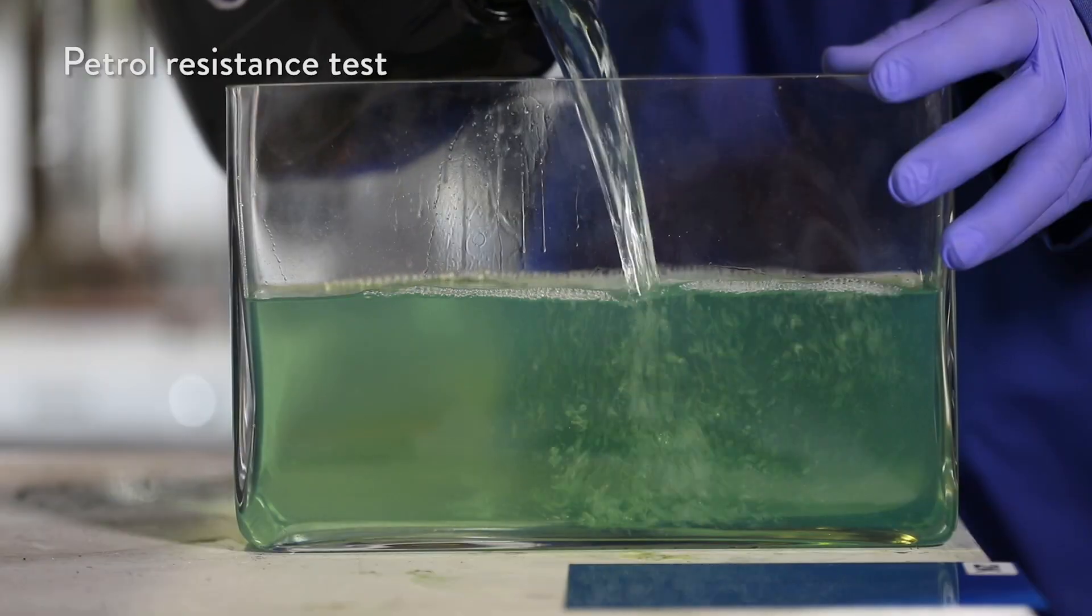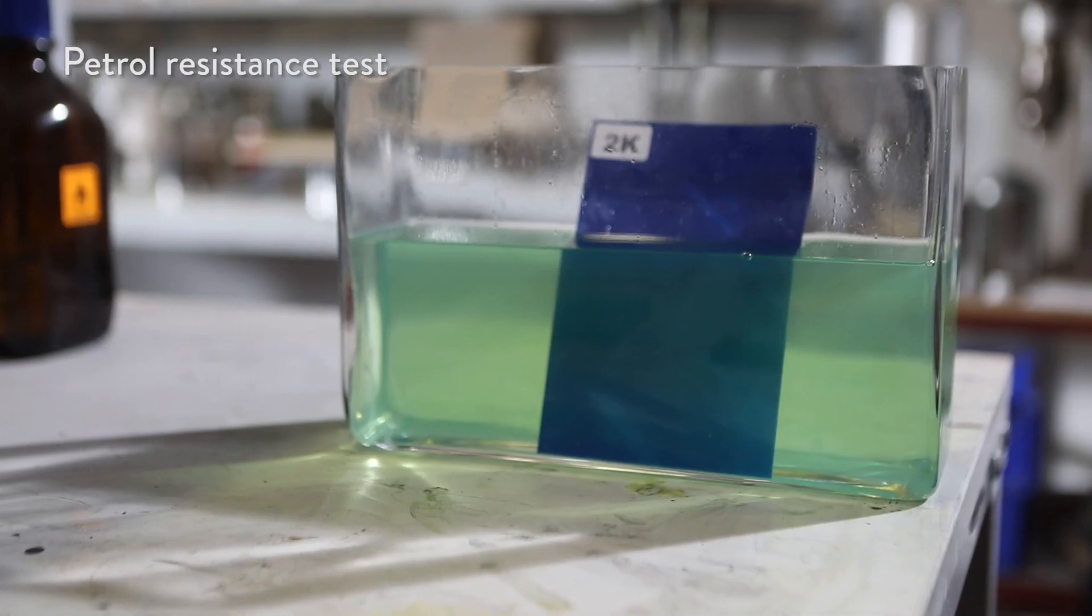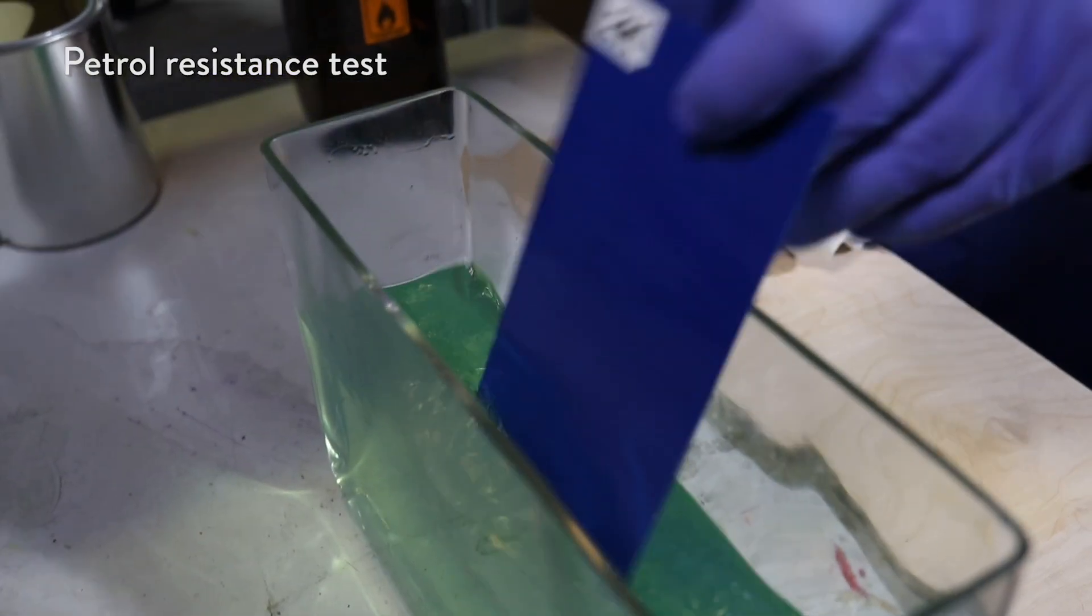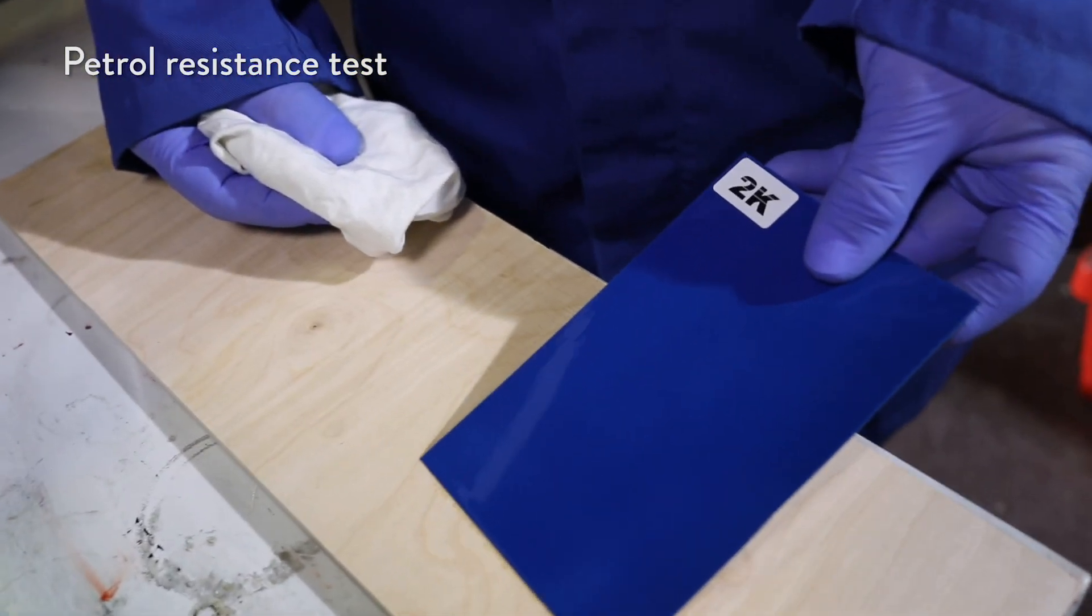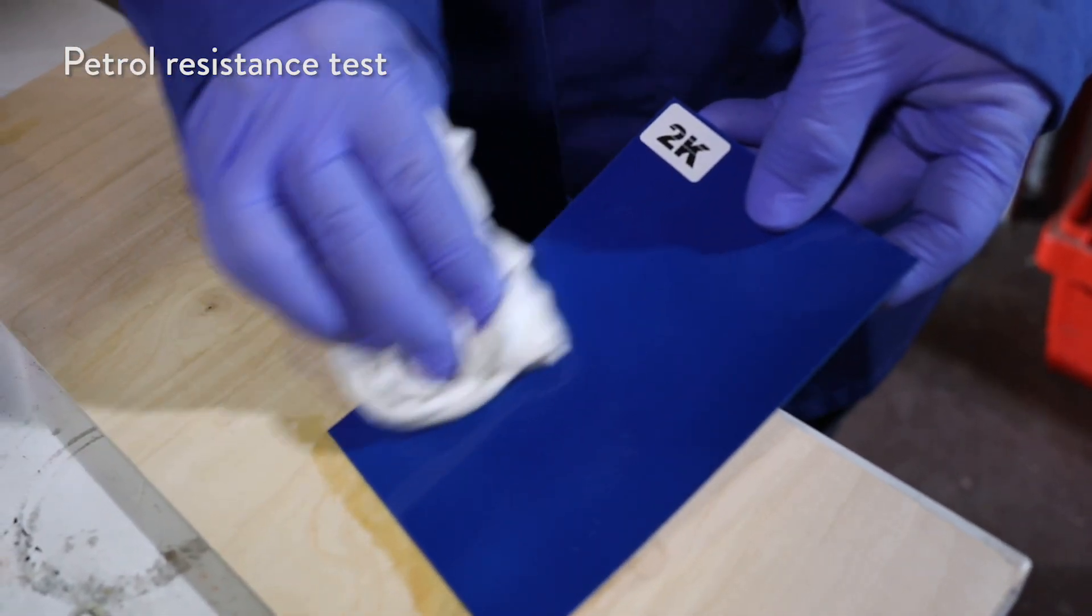After the paint is cured at least seven days, 2K has a very high chemical resistance. Ordinary paints will get soft, and you can wipe paint off with a cloth soaked in petrol. However, petrol or any detergent has no impact on the surface of 2K.